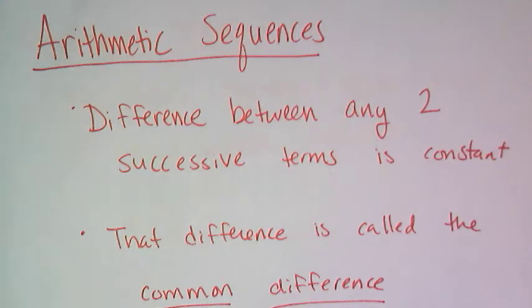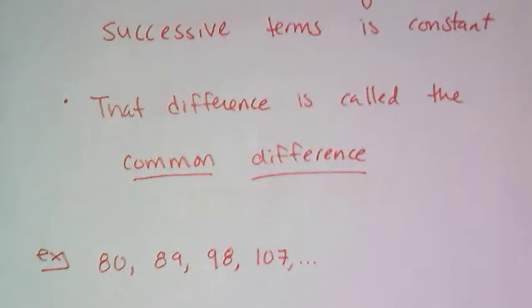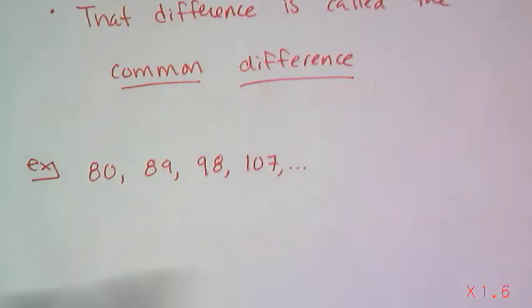And we call that difference a common difference. So here's an example of something that is arithmetic: 80, 89, 98, and 107.